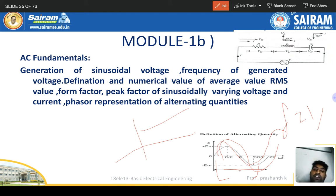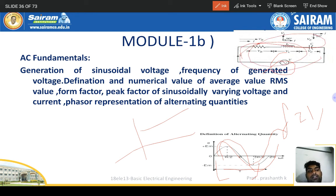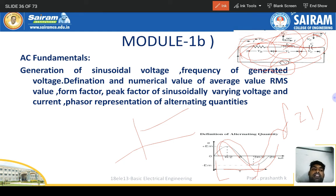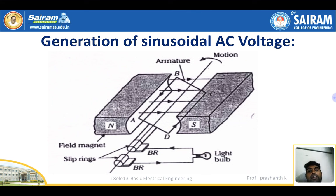Next, we cover sinusoidally varying voltage and current, and phasor representation of alternating quantities — the location in the sine wave where the conductor is in the generator. The symbol of AC is shown along with RLC circuits: in a resistor, voltage and current are in phase. In an inductor, current lags voltage by 90 degrees. In a capacitor, current leads voltage by 90 degrees.